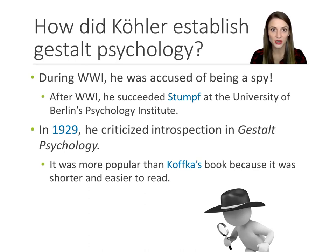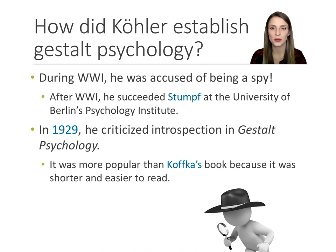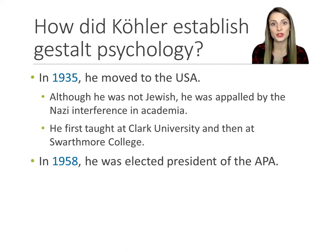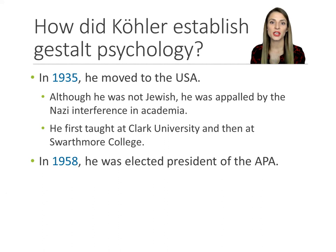The other major event that helped popularize Köhler as a Gestalt psychologist was his book published in 1929, which he called Gestalt Psychology. This book was more popular than Koffka's book — it was shorter, easier to read, and written for anyone interested in Gestalt Psychology. Several years after publishing his very popular book, he moved to the United States, starting at Clark University and then moving to Swarthmore College.